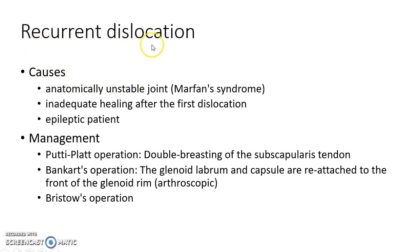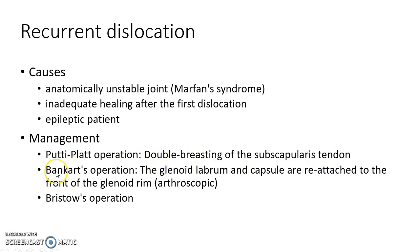Recurrent dislocation of the shoulder can be caused by an anatomically unstable joint — for example, in patients with Marfan syndrome — inadequate healing after the first dislocation, or epilepsy. If recurrent dislocation is problematic, surgical options include the Putti-Platt operation, Bankart's operation, and the Bristow operation. In the Putti-Platt operation, double breasting of the subscapularis tendon is performed. In Bankart's operation, the glenoid labrum and capsule are reattached to the front of the glenoid rim, which can also be done arthroscopically.